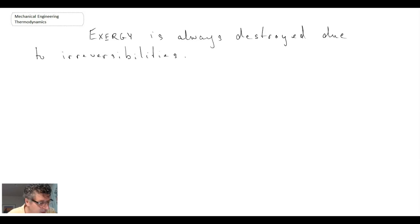Exergy is always being destroyed. Consequently, we can write that the change in exergy, so exergy at state two minus exergy at state one, is always going to be less than zero. Given that exergy is being destroyed, it is going down.